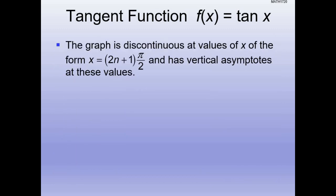It is always discontinuous. How do we know how often it's discontinuous? By 2n+1 times pi over 2, because it occurs every pi over 2. Why pi over 2? Because cosine of pi over 2 is zero, cosine of 3 pi over 2 is zero, 5 pi over 2 is zero, 7 pi over 2 is zero. So as we go around and around, you will get division by zero — that's where all the asymptotes occur.